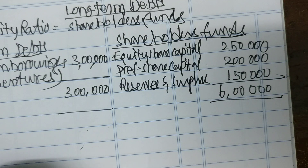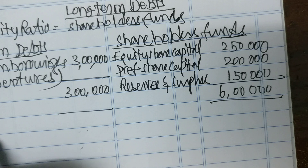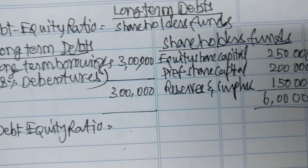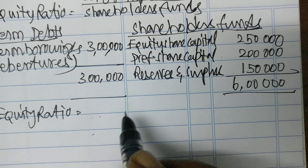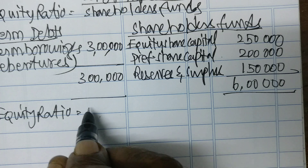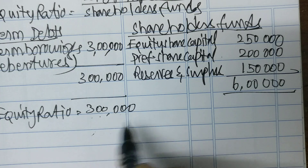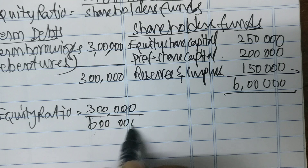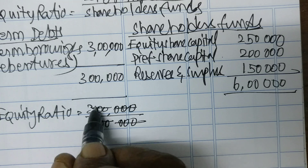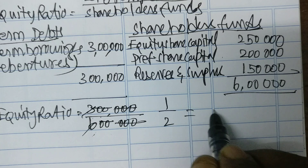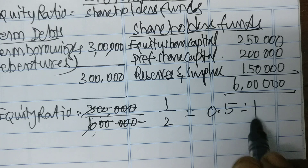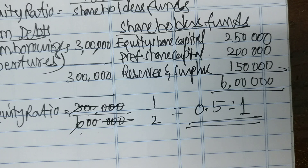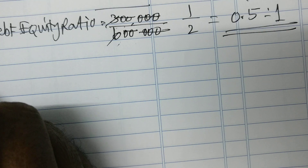Debt equity ratio equals long-term debts 3 lakhs divided by shareholders' funds 6 lakhs. That is 3 lakhs by 6 lakhs = 0.5 is to 1. This is the debt equity ratio.